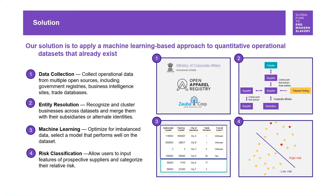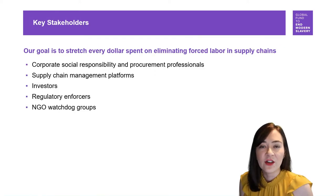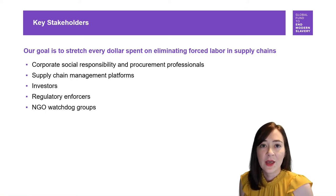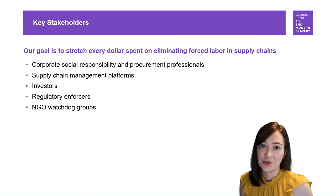Iterating on this process has also allowed us to identify risk drivers — operational features that have predictive power over the risk of forced labor at the firm level. Our goal is to stretch every dollar spent on eliminating forced labor in supply chains by offering this to corporate social responsibility and procurement professionals, supply chain management platforms, investors, regulatory enforcers, and NGO watchdogs.